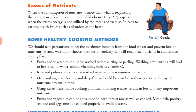Some healthy cooking methods: we should take precautions to get maximum benefits from food and prevent loss of nutrients. We should choose cooking methods that retain nutrients while also adding flavor. Fruits and vegetables should be washed before cutting or peeling — washing after cutting leads to loss of water-soluble vitamins such as vitamin C. Rice and pulses should not be washed repeatedly as it removes nutrients. Overcooking, over-boiling and deep frying should be avoided as these destroy nutrients present in the food.